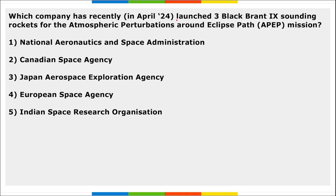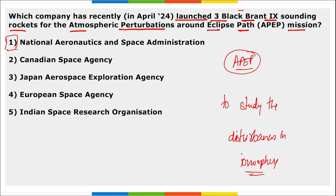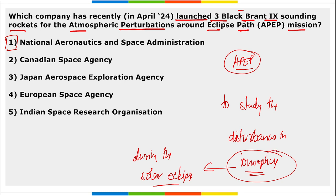Next: which company has recently launched three Black Brant IX sounding rockets for the APEP — Atmospheric Perturbations around Eclipse Path — mission? It is NASA. NASA launched three Black Brant IX sounding rockets for the APEP mission. The aim of this mission is to study the disturbances in the ionosphere, specifically during the solar eclipse, to observe what disturbances occurred in the ionosphere during that solar eclipse.